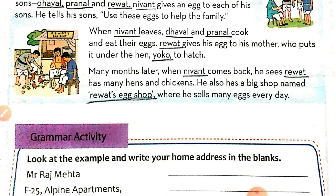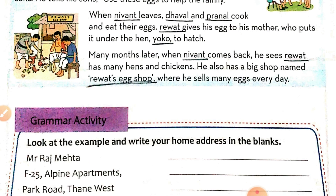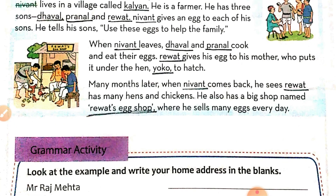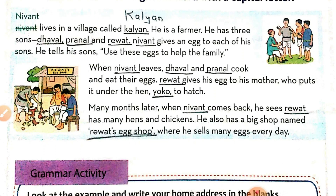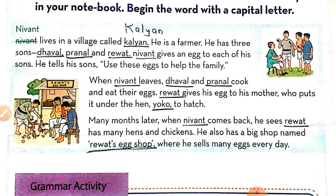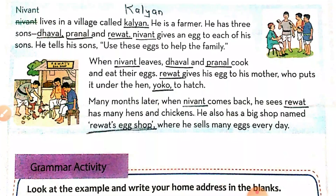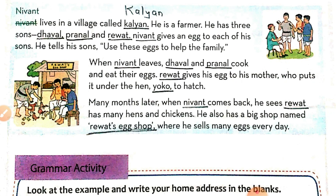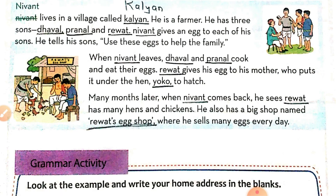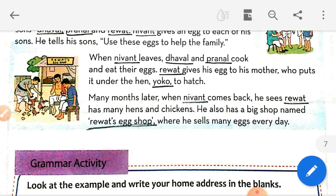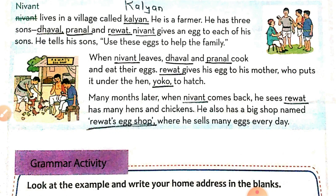Only Revat has hens and chickens, and he has a big shop called Revat's Egg Shop where he sells eggs. The words I have underlined — their first letter must be written in capital, because they are special names. In the story, Dhaval and Pranal ate their eggs, so they did not make progress. But Revat used his egg for progress, so he benefited.